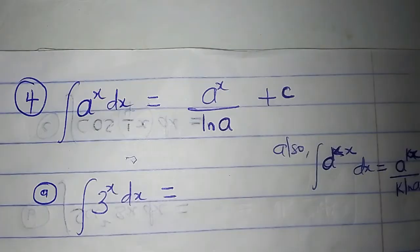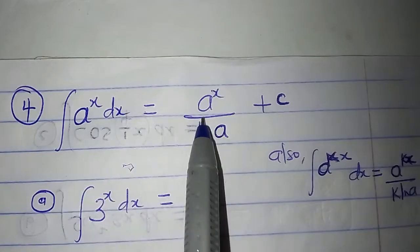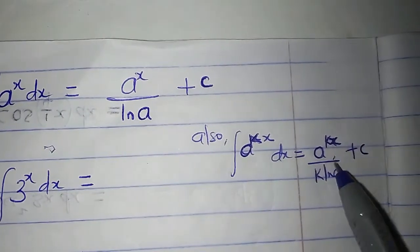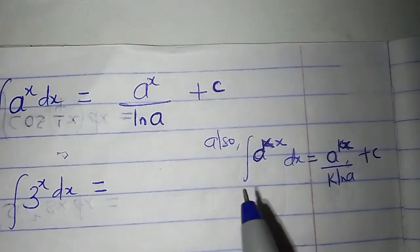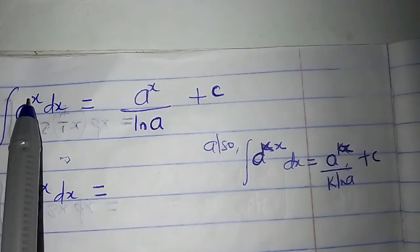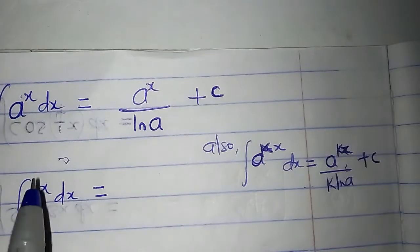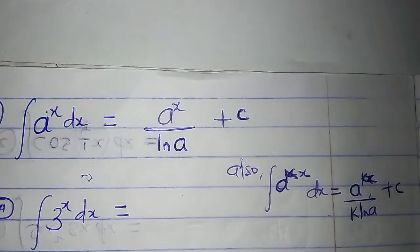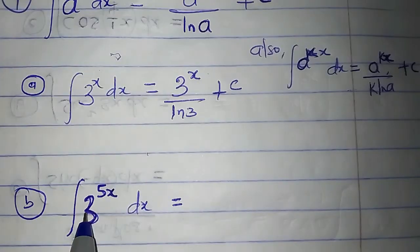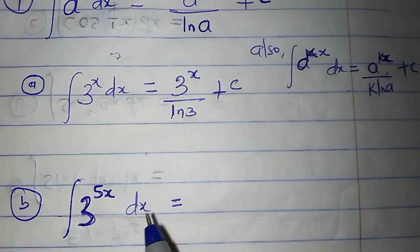The next standard integral: the integral of a to the power of x dx, where a is a number. The rule says it is a to the power of x all over ln a, plus c. We can also have the integral of a to the power of kx, which equals a to the power of kx all over k times ln a, plus c. For example, the integral of 3 to the power of x dx is 3 to the power of x all over ln 3, plus c. And the integral of 3 to the power of 5x dx is 3 to the power of 5x all over 5 times ln 3, plus c.